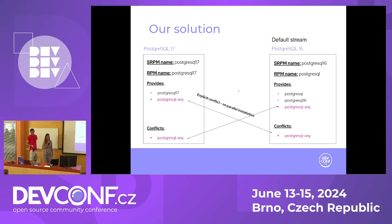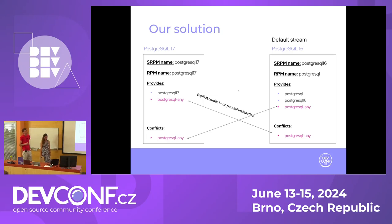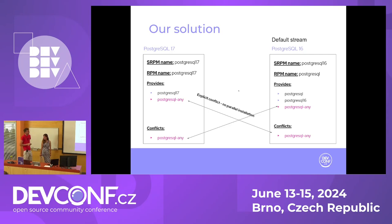For the last goal, we had to implement a mechanism to set up the default stream name. For this purpose, we used the RPM name: only the default stream produces a package name without the version - in this case, just 'postgresql' - and it also provides this as a virtual provide. Only the default version provides the 'postgresql' symbol, so DNF is not confused by many postgresql symbols in the repository and will choose the default stream.